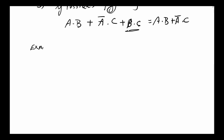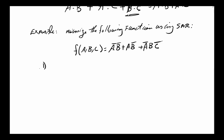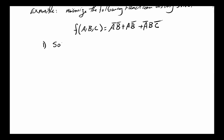Now that we know the process, let's go ahead and do an example. The example wants us to minimize the following function using SAR. The function is: f(a, b, c) = A'B' OR AB' OR A'BC'. The very first step is that we have to write the standard SOP form, and the way we do that is we'll take a look at a truth table for this function — inputs on one side: A, B, and C.